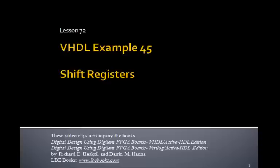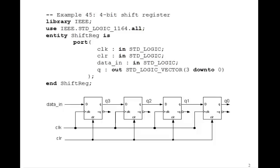This is Lesson 72, VHDL Example 45, and this example will implement a 4-bit shift register in VHDL.